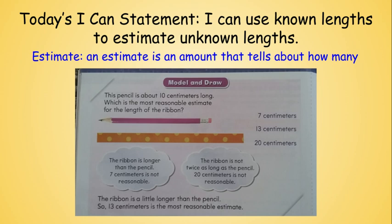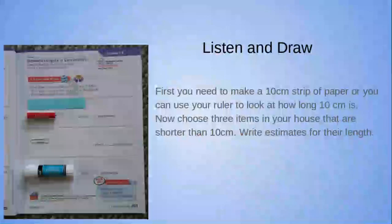Go ahead and open up to the 'Listen and Draw' section of your workbook. The directions say: make a 10-centimeter strip of paper, or use your ruler to see how long 10 centimeters is, then choose three items in your house that are shorter than 10 centimeters and write estimates for their length. In my picture, that long piece of blue paper is my 10-centimeter strip. The three objects I chose are a battery, a paper clip, and a glue stick.